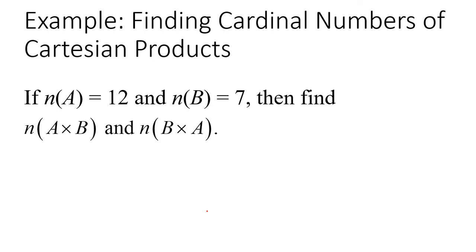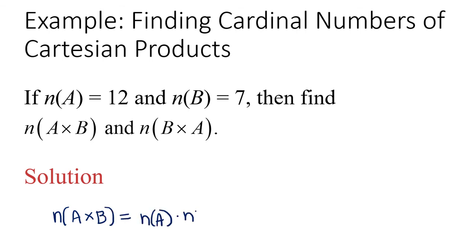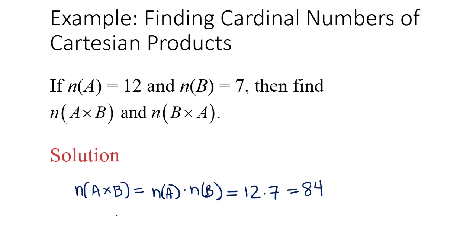Here's an example you might find in your MyMathLab homework. It might not tell you what sets A and B are, but just tell you how many elements are in them and ask you to find how many elements are in the Cartesian products. So if the cardinality of A is 12 and the cardinality of B is 7, find the cardinality of A cross B and B cross A. You would apply the cardinal number formula: the number of elements in A cross B equals the number in A times the number in B, which is 12 times 7, equal to 84. And since |A cross B| equals |B cross A|, that is also 84.